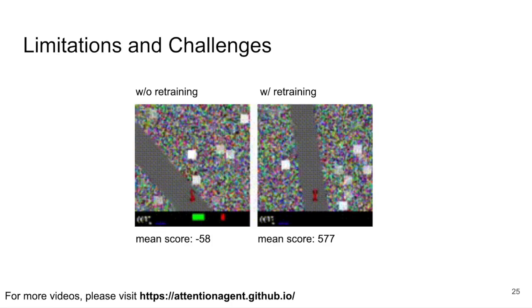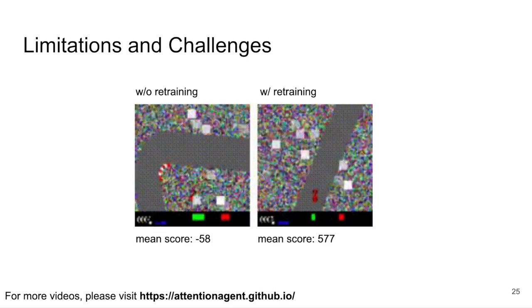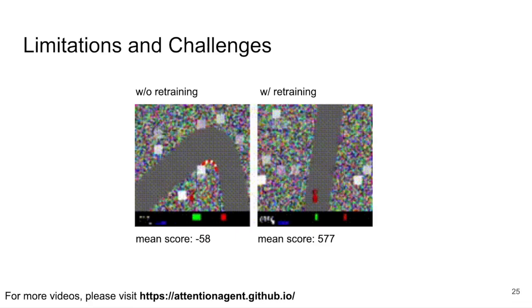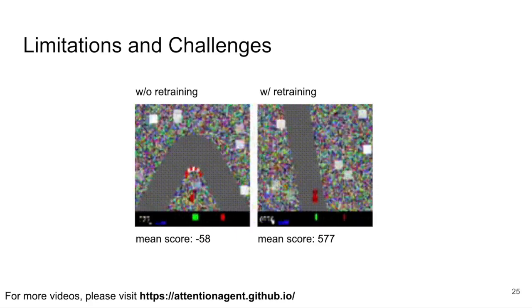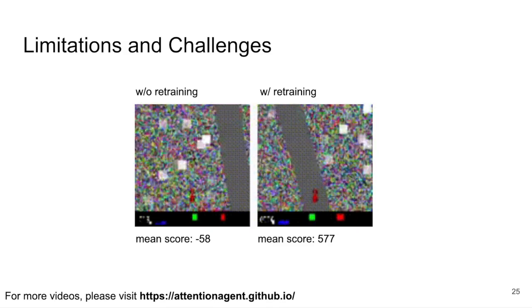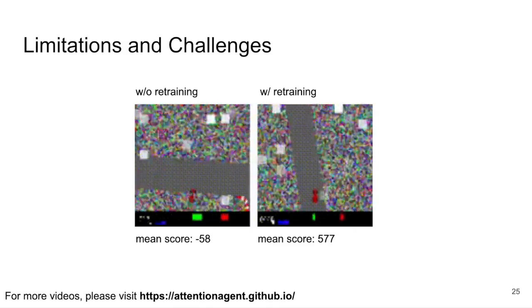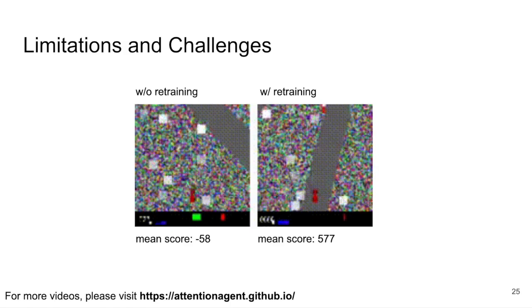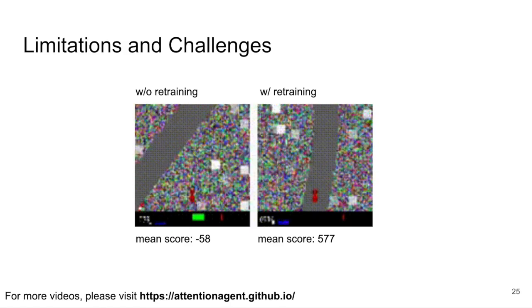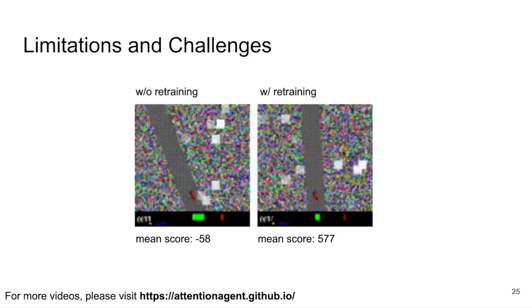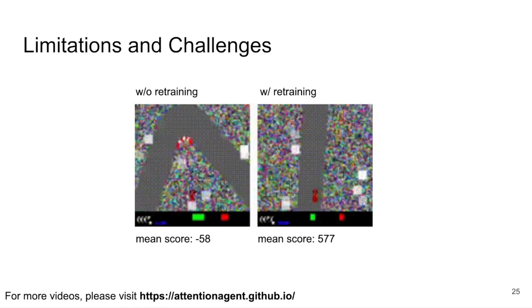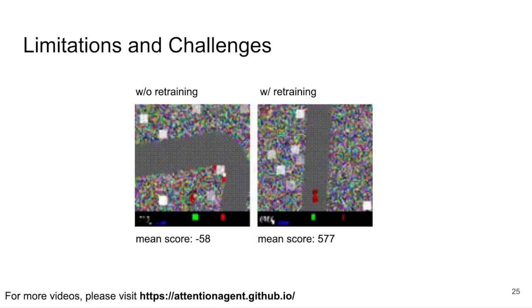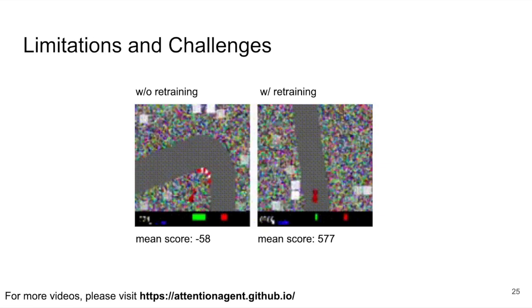When we take this one step further and replace the background with pure uniform noise, we observe that the agent's attention module breaks down entirely and attends only to random patches of noise rather than to the road-related patches. When we train an agent from scratch in this noisy background environment, it still manages to get around the track, although the performance is only mediocre. Interestingly, the self-attention module still attends only to the noise rather than to the road, but it appears that the controller actually learned a policy to avoid such locations. These results suggest that the simplistic choices we made in designing the agent, such as to only use the patch locations rather than their contents, may not be adequate for more complicated tasks.